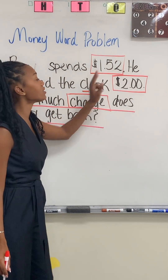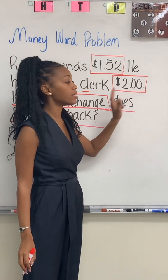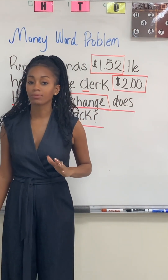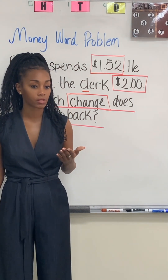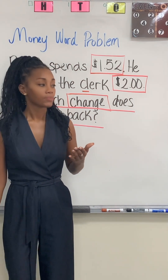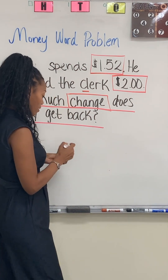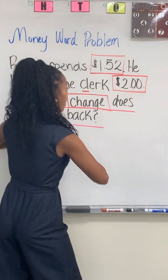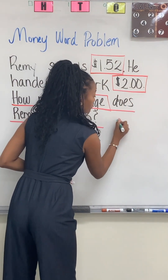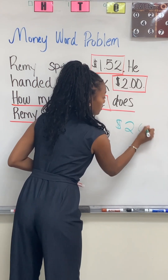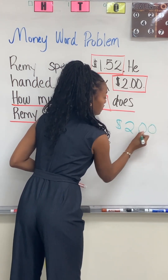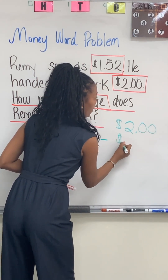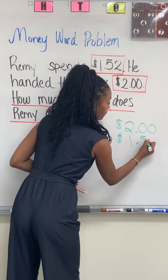Now I have $1.52 and $2. I have to subtract. But in subtraction, what comes first? The bigger number — the larger number. So we're going to put our larger number on top: $2 minus $1.52.